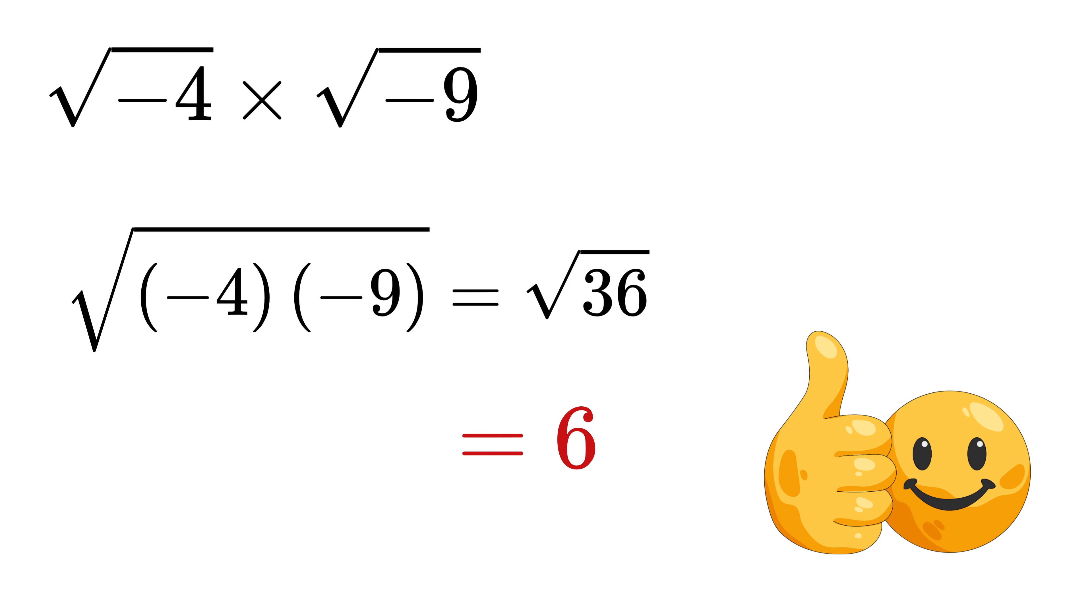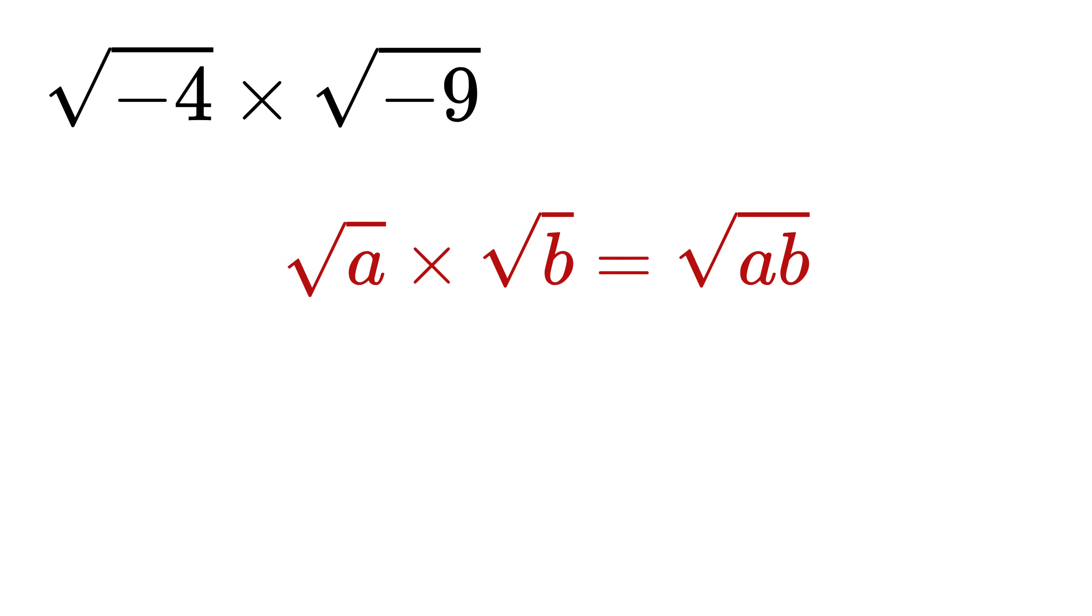This answer feels satisfying, so many people stop here. The key issue is that the product rule for square roots does not always work. This rule only works when at least one of the numbers inside the square roots is non-negative. When both numbers are negative, the rule fails.